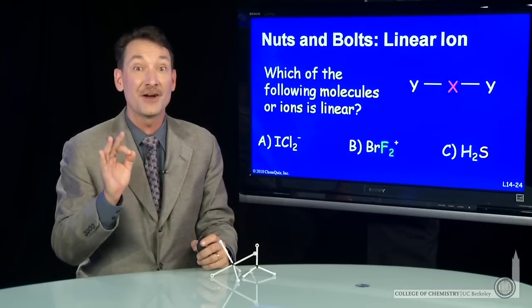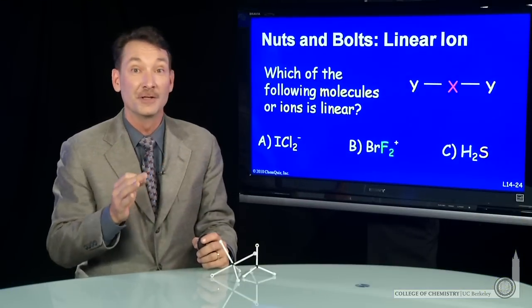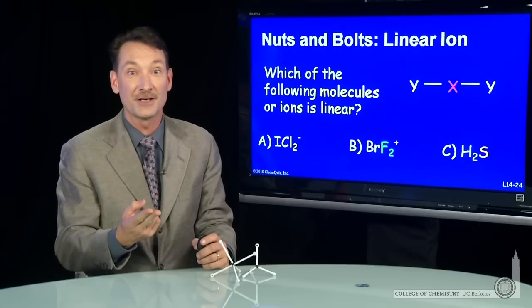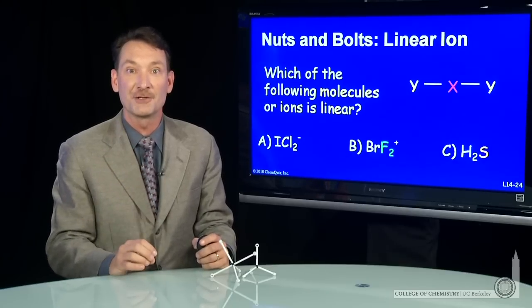Remember, to find a linear ion or molecule, what we have to do is first draw Lewis dot structure and get some steric numbers and see what the molecular geometry actually is.